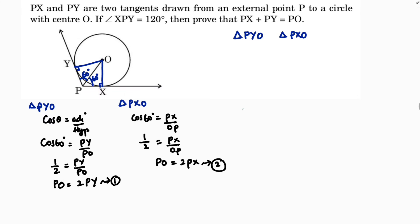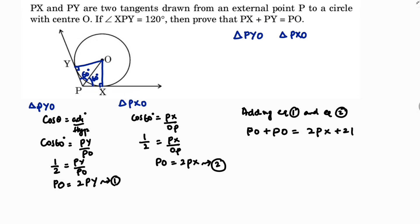Now I will add equation 1 and equation 2. LHS plus LHS equals RHS plus RHS: Po plus Po equals 2Px plus 2Py. So 2Po equals 2 times (Px plus Py). The 2s cancel, giving Po equals Px plus Py.